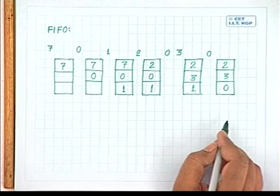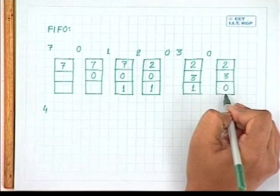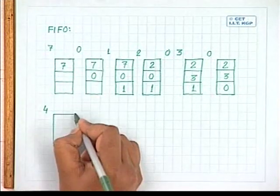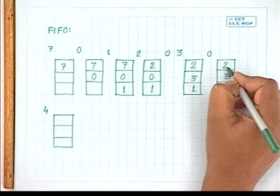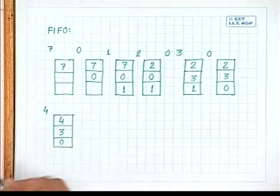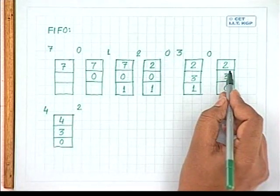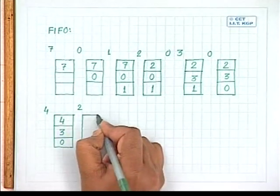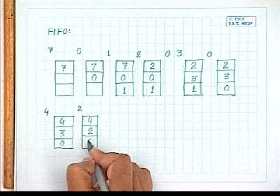Page 4 is referred — page fault; page 2 was brought first so replace page 2 with page 4, giving frames: 4, 3, 0. Page 2 is referred next but was just replaced — again a page fault. Replace page 3 with page 2, giving frames: 4, 2, 0.